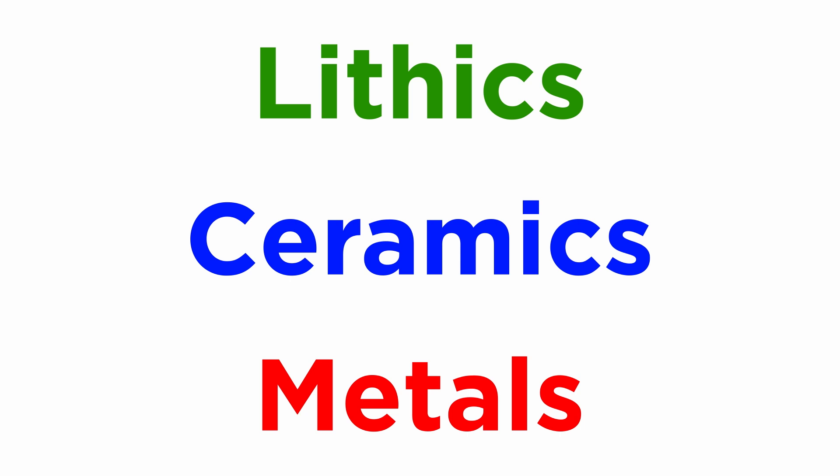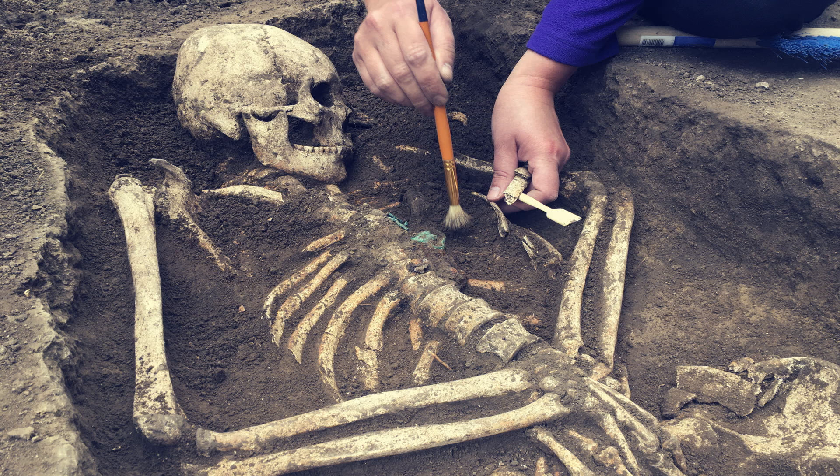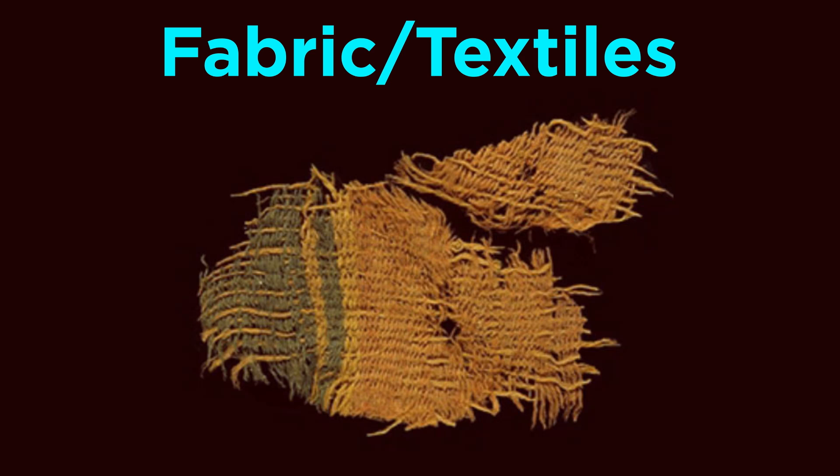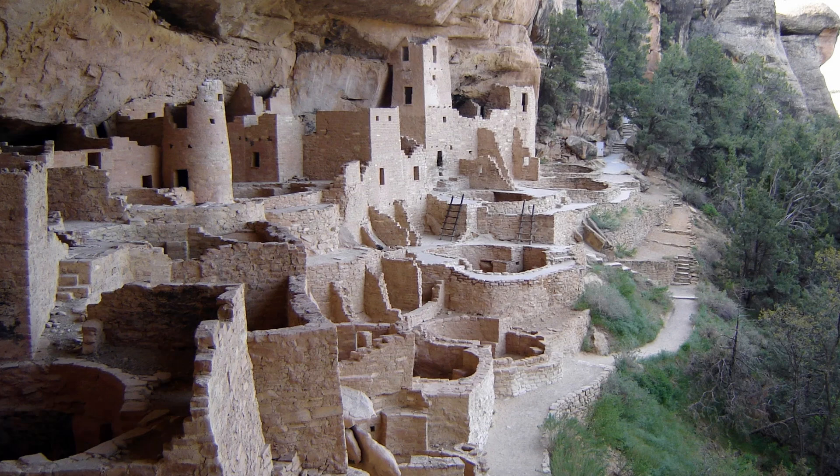Lithics, ceramics, and metals are the most common artifact types in the archaeological record. However, many others exist and are important in archaeological interpretations. Bones, both animal and human, are critical to archaeology. We will discuss human burials in greater detail a bit later. With animal bones and charred plant remains, we can get a view of what people were eating at a site. Another important artifact is fabric and textiles, though preservation of these artifacts is very rare and they are usually only found in deserts and other places with low humidity. Next, let's look at a material remain type that helps us contextualize artifacts we find: features.